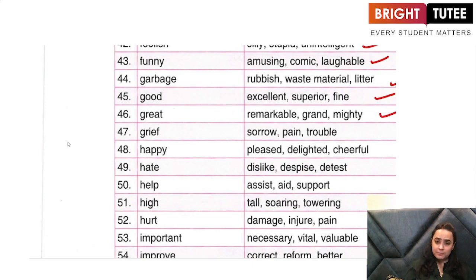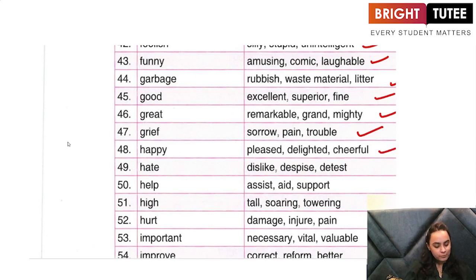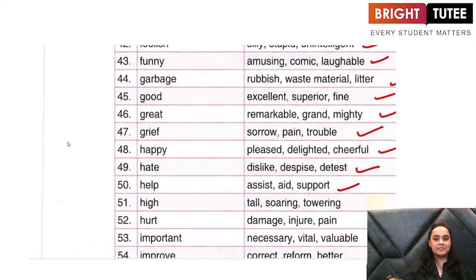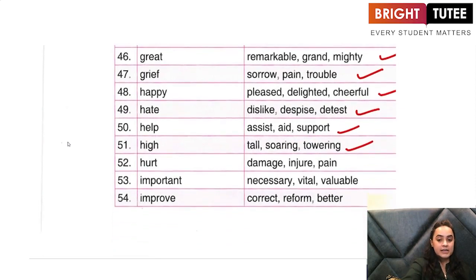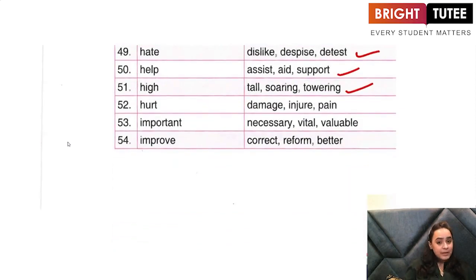'Happy' — is pleased, delighted, cheerful. 'Hate' — is dislike, despise, detest. 'Help' — is assist, aid, support. 'High' — is tall, soaring, towering. 'Hurt' — is damage, injured, or pain.